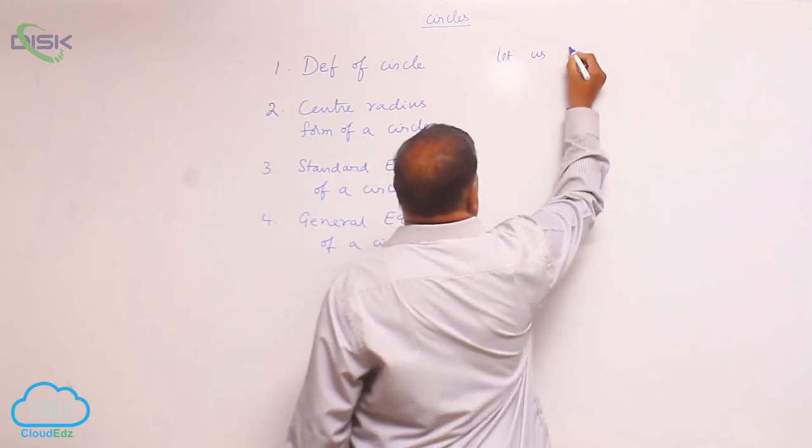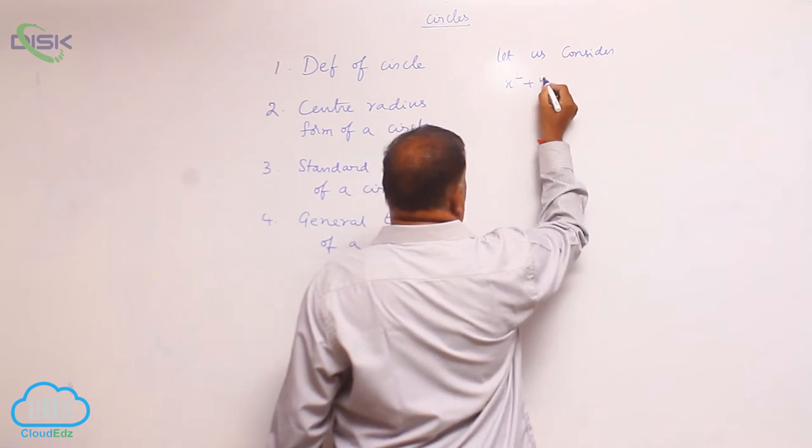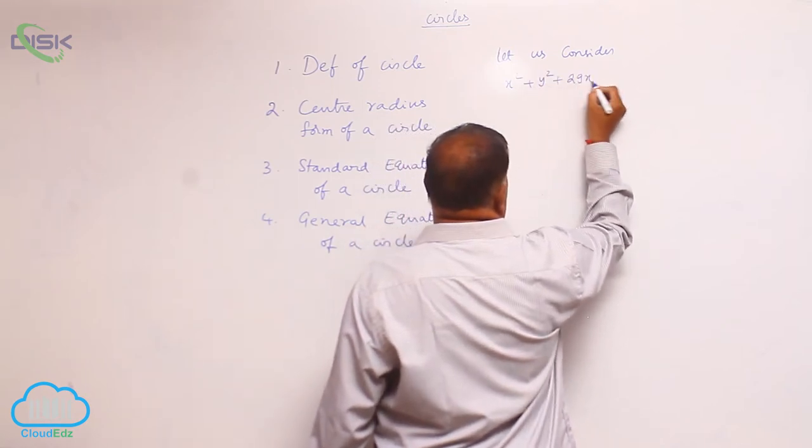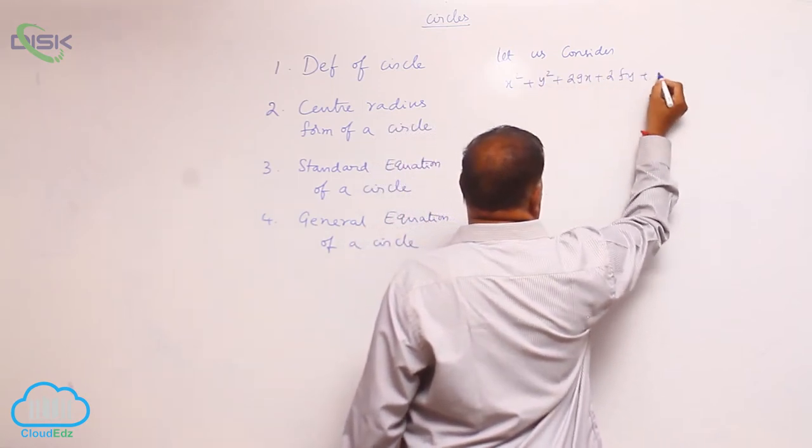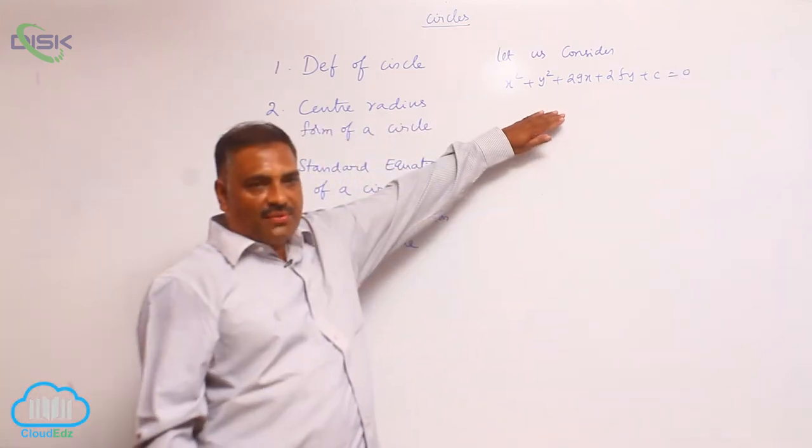Let us consider x square plus y square plus 2gx plus 2fy plus c is equal to 0. We discuss about the nature of this equation.